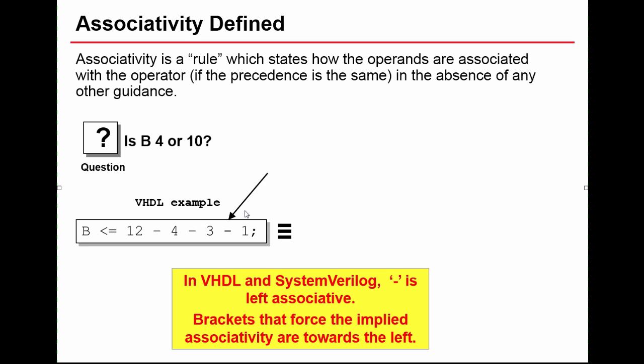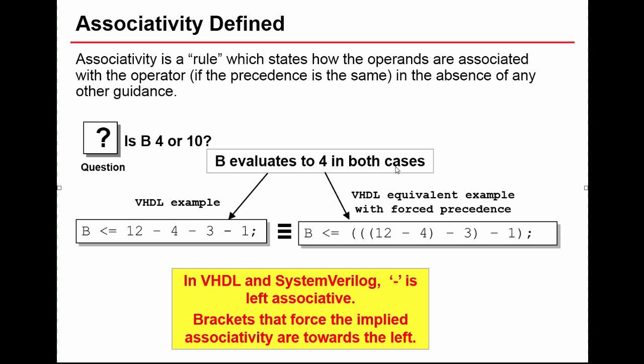Now in SystemVerilog and VHDL the minus sign is left associative, so as we've just learned on the previous slide, that means the brackets that force the implied precedence are towards the left, they group towards the left. So what this means for us is the result we will get will evaluate to 4 because we do the 12 minus 4 first to get us 8, and then we take that result and then take away 3 from it. So that's 5 and then we take that result and then take away the 1. That's what left associative means, these brackets which force the implied precedence are to the left.